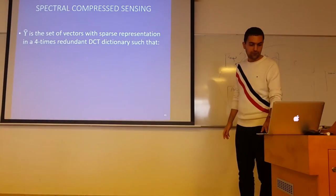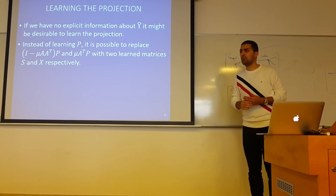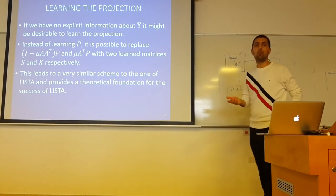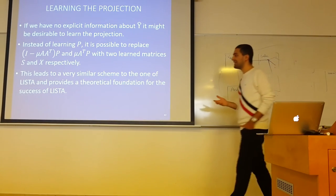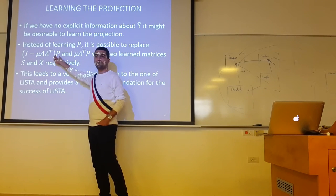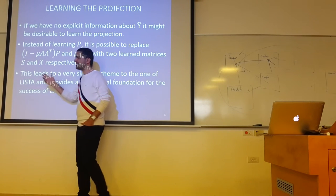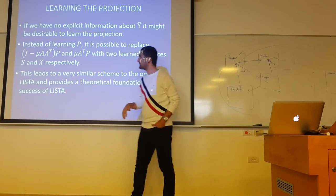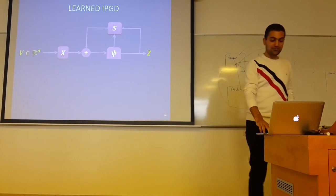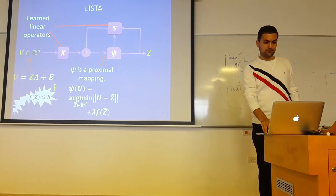We also show this for compressed sensing with coherent dictionaries. Interestingly, our theory also provides an explanation for why LISTA converges faster. Because in some cases we have no idea what the inaccurate projection P should be. So instead of trying to guess what this projection is, we can use the same strategy that Gregor and LeCun used — learn the whole matrices — and in this way let the network learn what these inaccurate projections are.